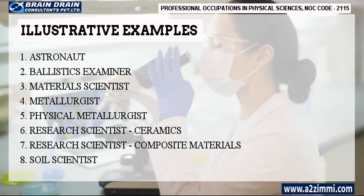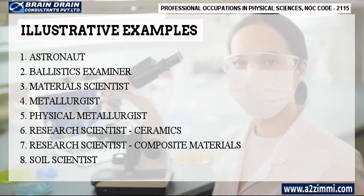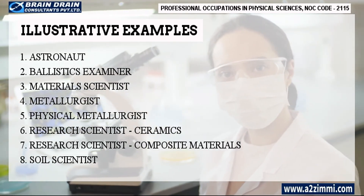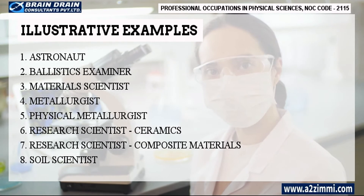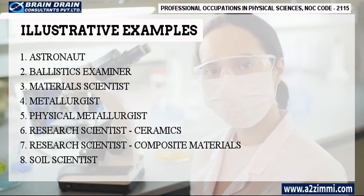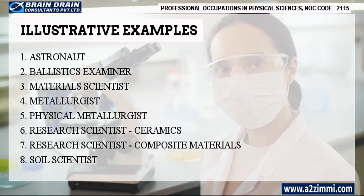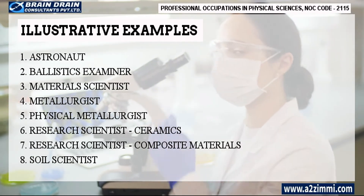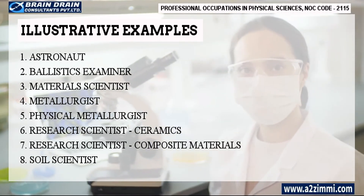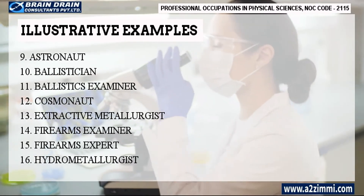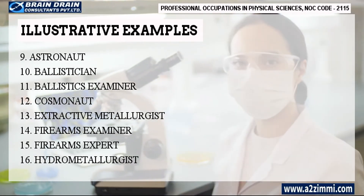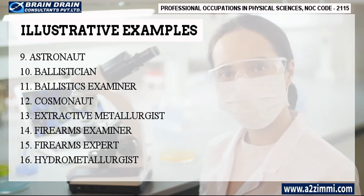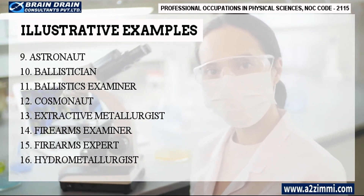Illustrative titles for the profile of other professional occupations in physical sciences are as follows: Astronaut, Ballistics examiner, Material scientist, Metallurgist. The list is quite large, so if you want to read all the alternative profile titles then you can pause this video and have a proper glimpse.